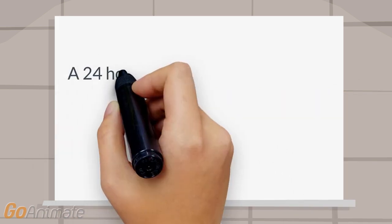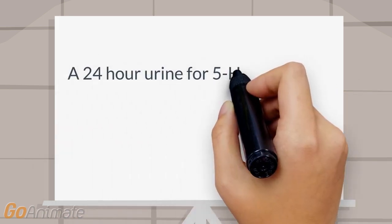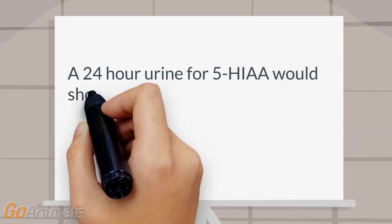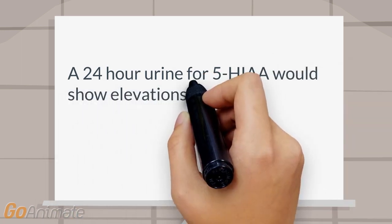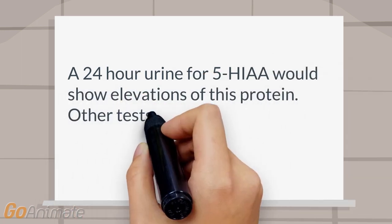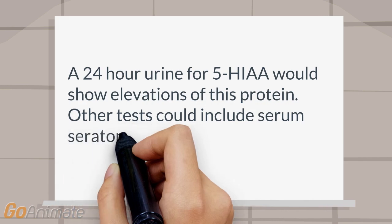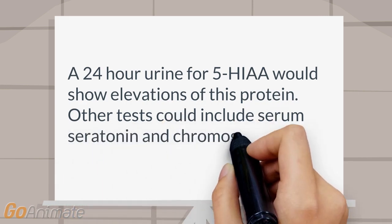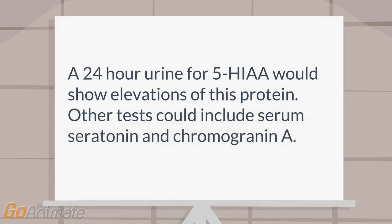A 24-hour urine for 5-HIAA would show elevations of this protein. Other tests could include serum serotonin and chromogranin A.